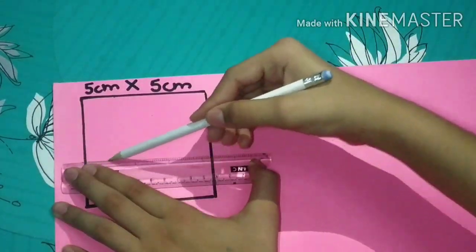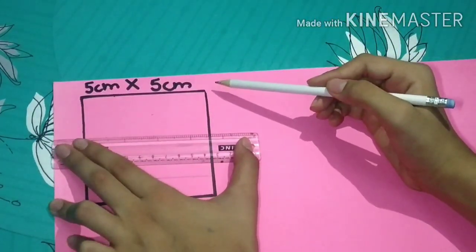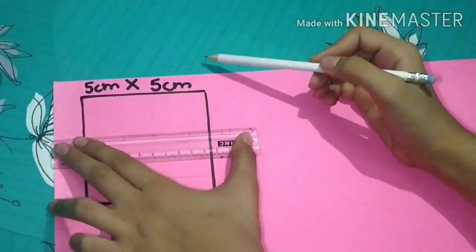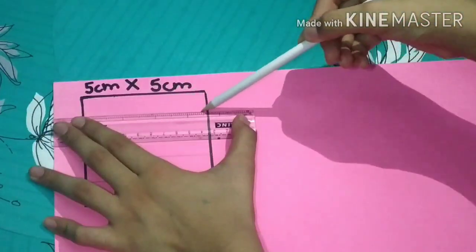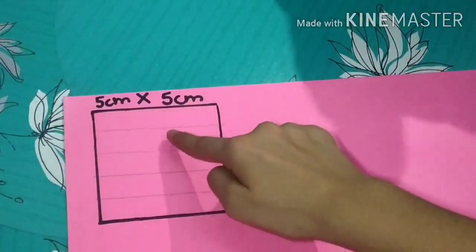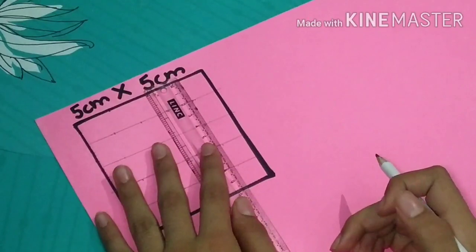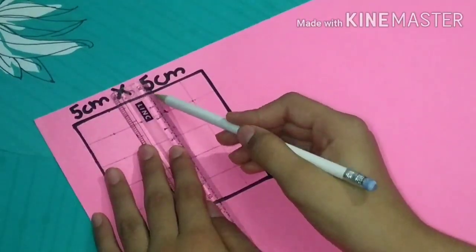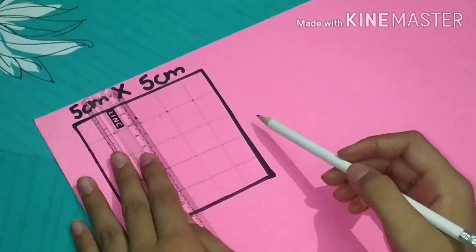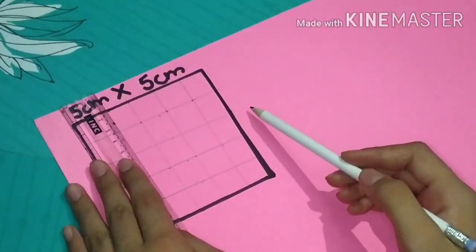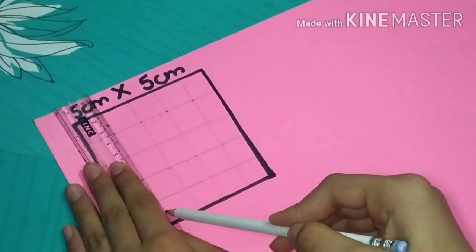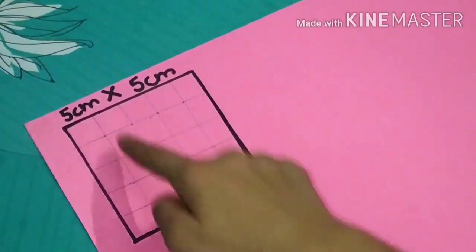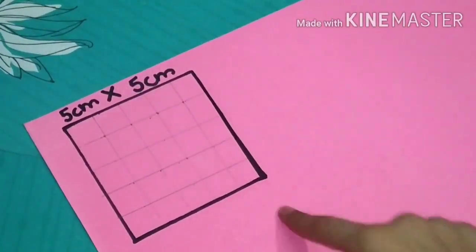For example, the square with side 5 centimeters will be divided into 25 small squares by constructing 5 parts vertically and horizontally. Similarly, square of side 4 centimeters has 4 into 4 which equals 16 squares, and the square with side 3 centimeters has 3 into 3 which equals 9 squares.